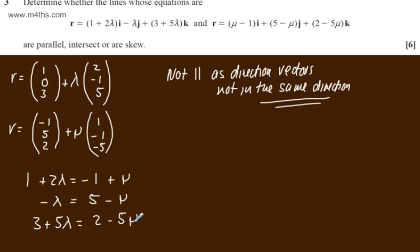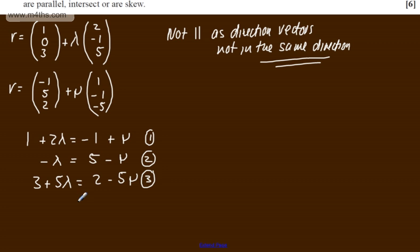I've got lots of choices here. I'm going to call this equation 1, this one equation 2, and this one equation 3. So if I add 1 and 2 together, what we're going to have is 1 plus λ equals 4, and μ will cancel. So from this we can see that λ equals 3.